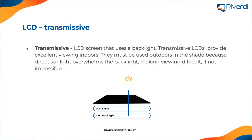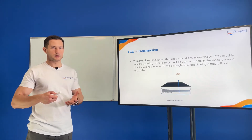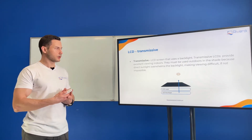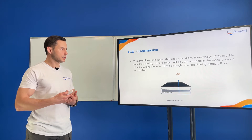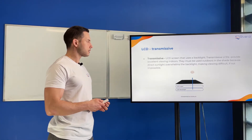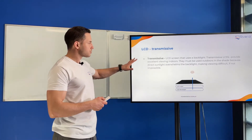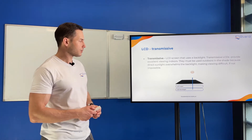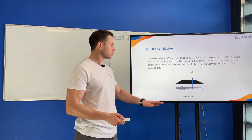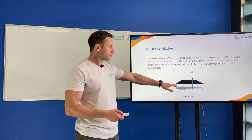Now we will talk about three different technologies used in monochrome displays and how the light is being transmitted and how we see the images. The most standard and common display would be the transmissive display, where we have transmission of the light from the backlight through the LCD.